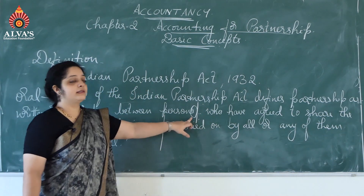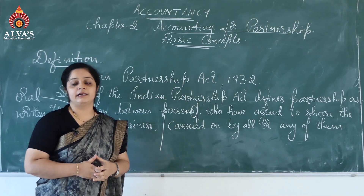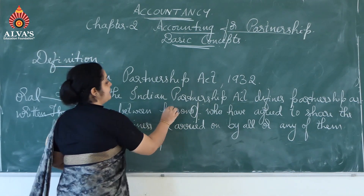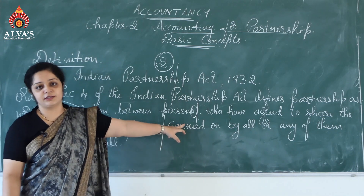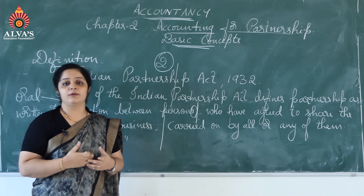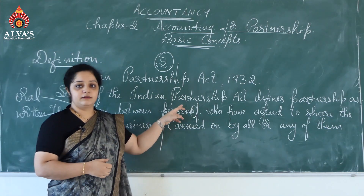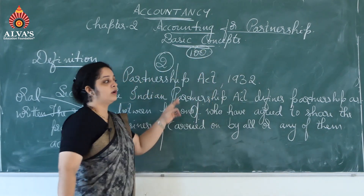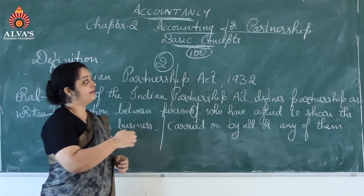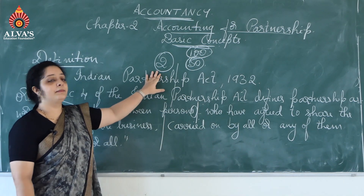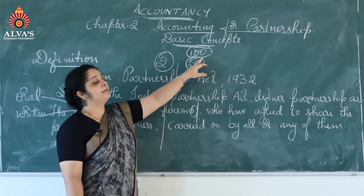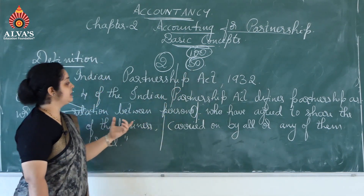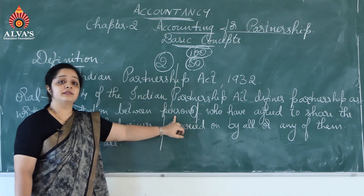The word 'persons' in the definition clearly states that, unlike in the case of sole proprietorship where there is only one person, here 'persons' means a minimum of two people are required to start a partnership. You may be asking what the maximum number is. As per the Companies Act of 2013, the maximum number of partners was 100, but later in the year 2014 it was reduced to 50.